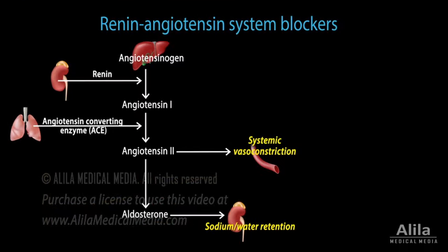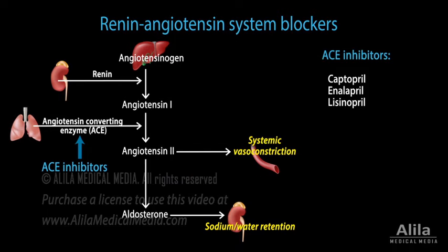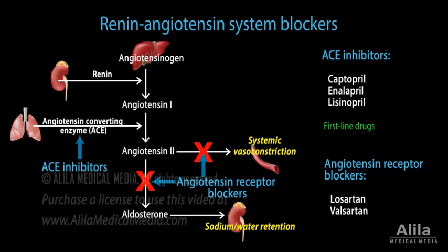Renin-angiotensin system blockers include ACE inhibitors and angiotensin receptor blockers. ACE inhibitors are commonly used as first-line treatment for hypertension. They block the conversion of angiotensin 1 to angiotensin 2, which in turn leads to a reduction in aldosterone. Their action reduces systemic vasoconstriction and increases sodium and water excretion by the kidneys. Angiotensin receptor blockers inhibit the effects of angiotensin 2, and their indications are similar to those of ACE inhibitors.